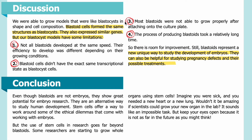Discussion: We were able to grow models that were like blastocysts in shape and cell composition. Blastoid cells form the same structures as blastocysts and also express similar genes. However, our blastocyst models have some limitations. One: not all blastoids developed at the same speed — efficiency varied depending on growing conditions. Two: blastoid cells didn't have the exact same transcriptional state as blastocyst cells. Three: most blastoids were not able to grow properly after attaching to the culture plate. Four: the process of producing blastoids took a relatively long time. Still, blastoids represent a new, unique way to study the development of embryos and can be helpful for studying pregnancy defects and their possible treatments.